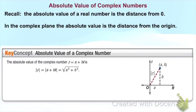First, the absolute value of a complex number. Recall that the absolute value of a real number is the distance from 0. In the complex plane, the absolute value is the distance from the origin. It's sort of the same idea—like the radius in a unit circle setup.